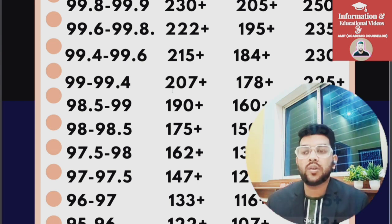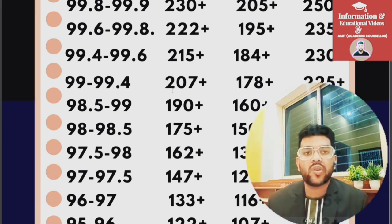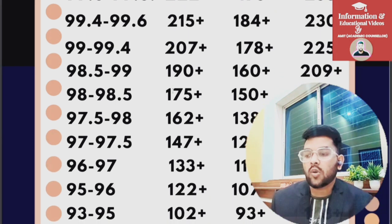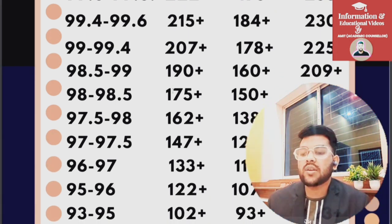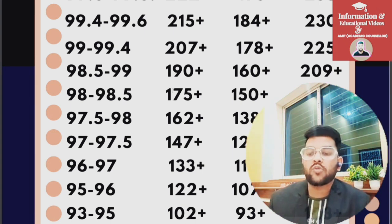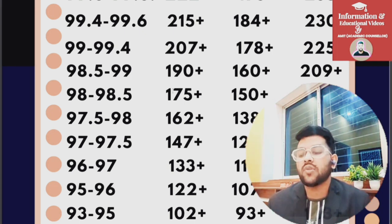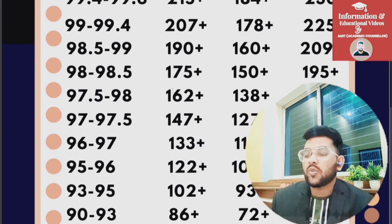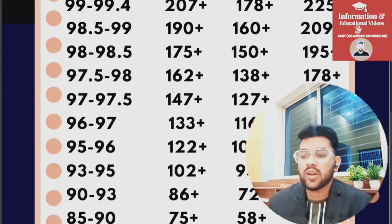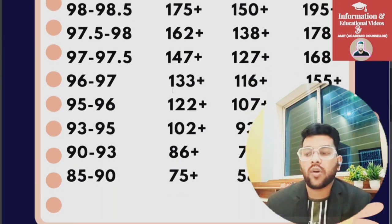For 96 percentile: hard 116, easy 155 plus marks. For 95: hard 107, easy 143. Here you can see the difference between easy and hard paper — due to difficulty level, a student gets different percentile for the same marks. For 93 percentile: hard 93 marks, easy 123 plus, and for 90: hard 72, easy 109 plus.